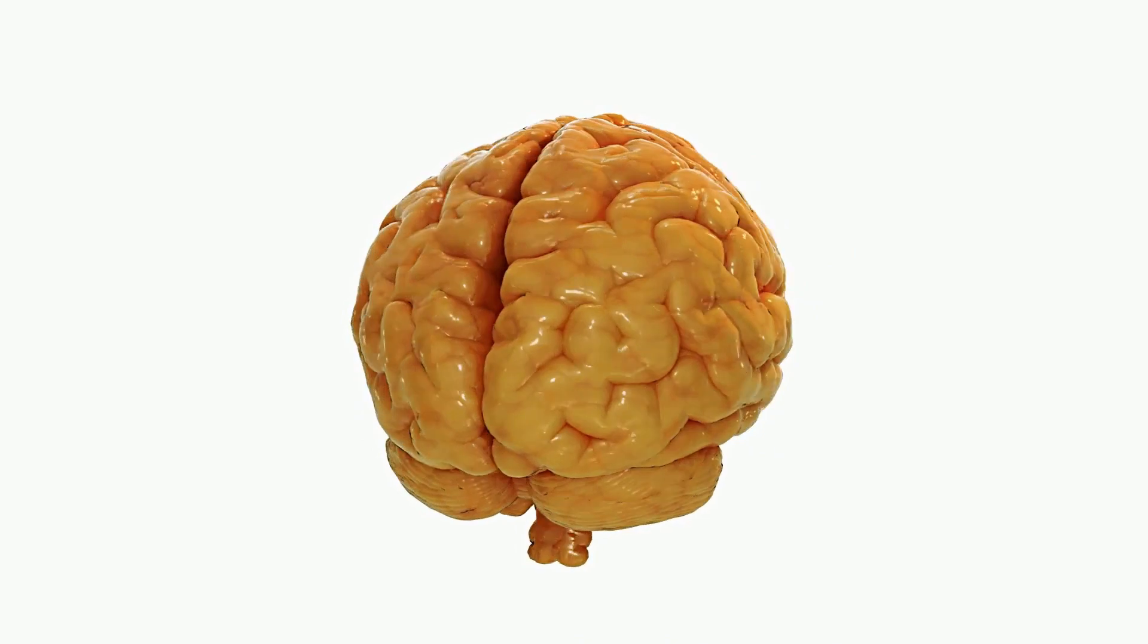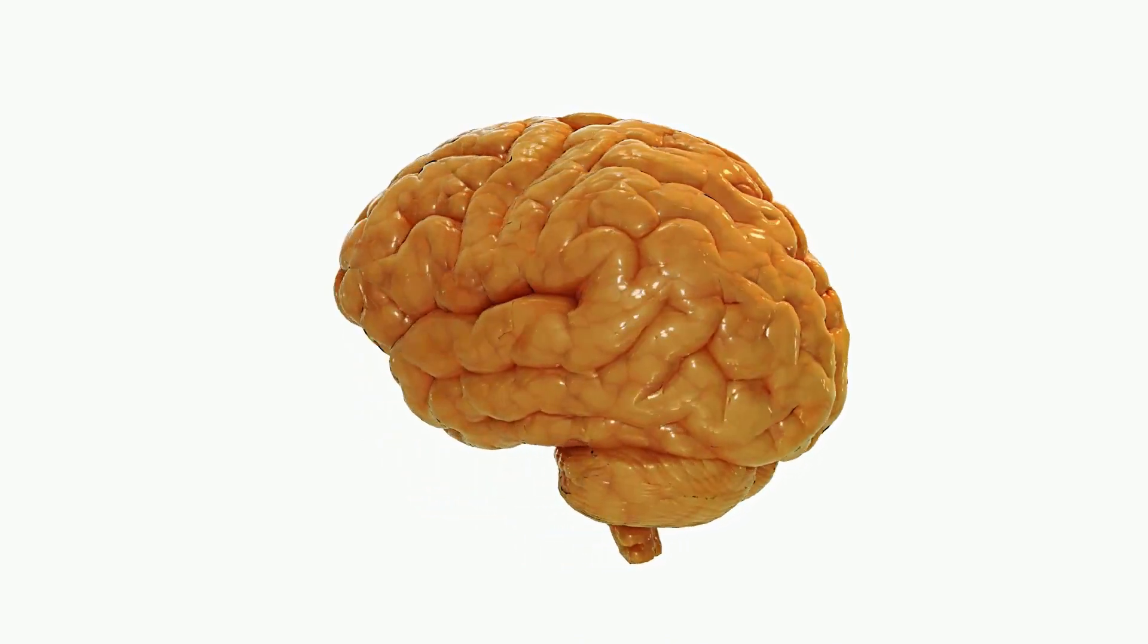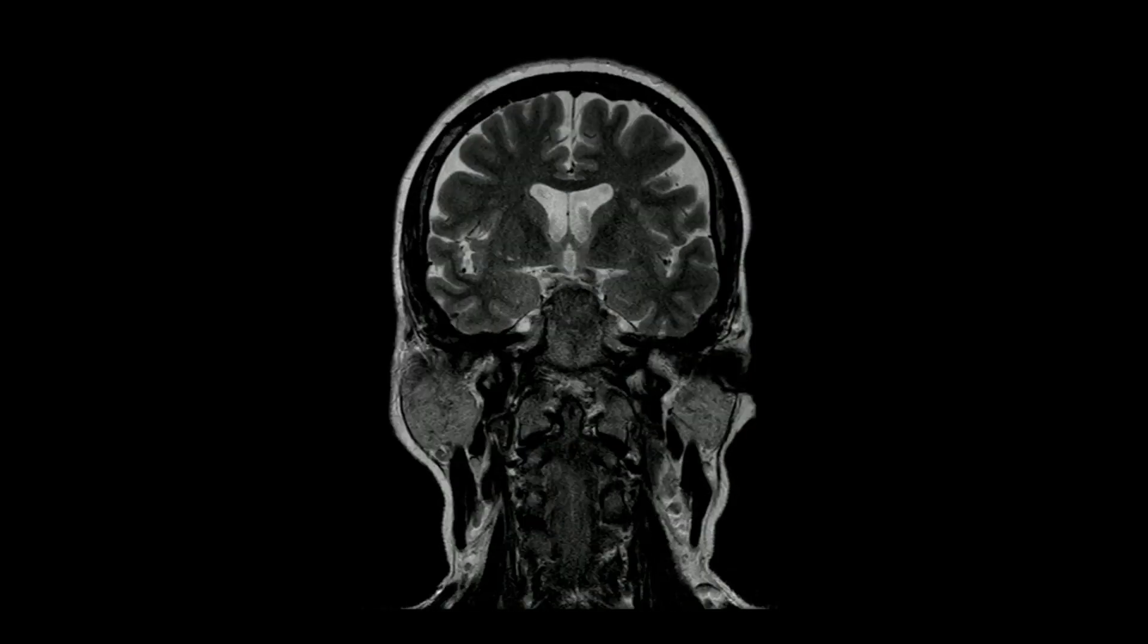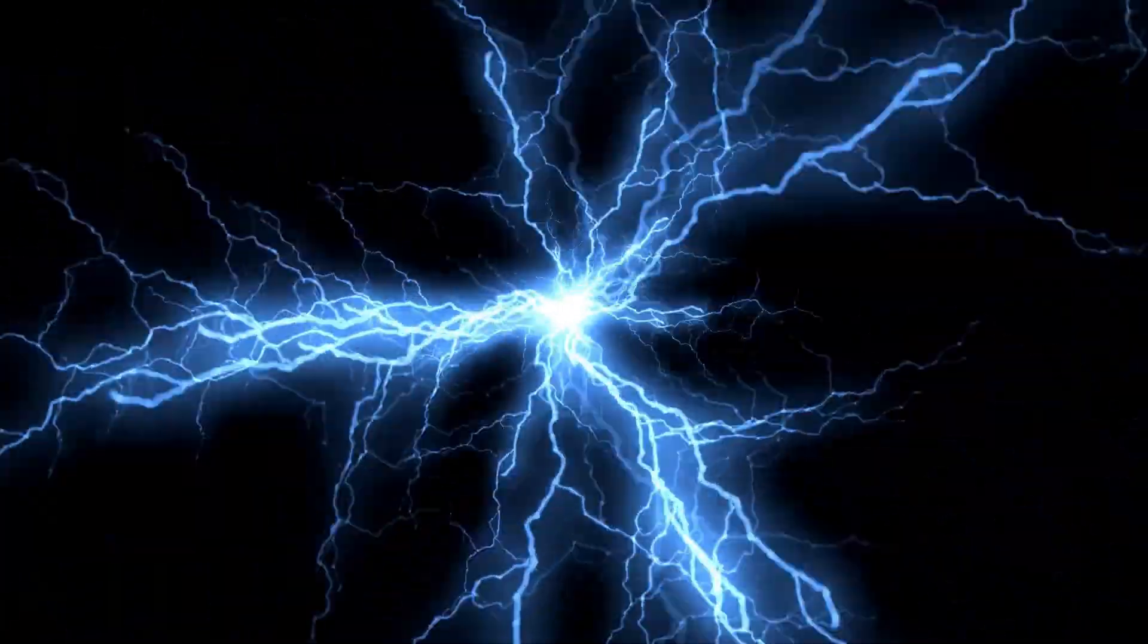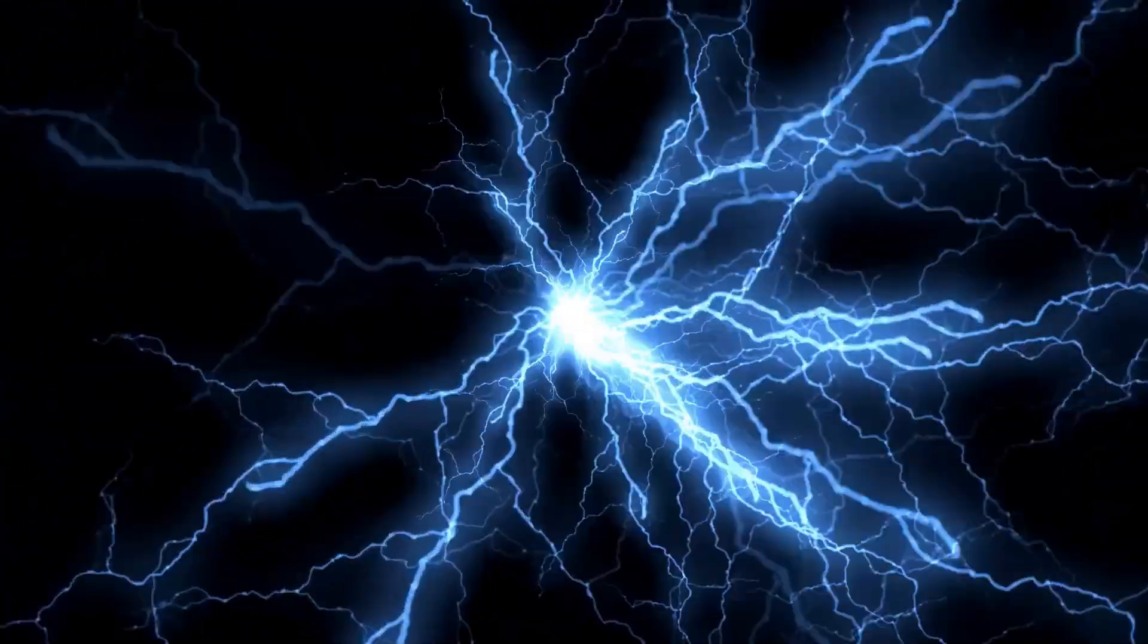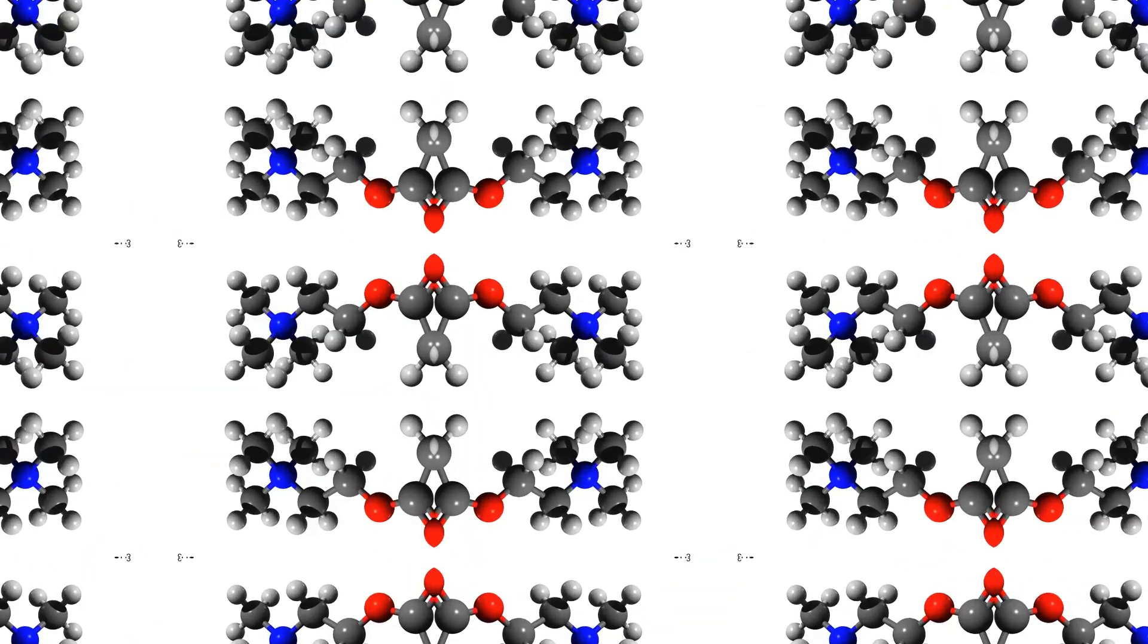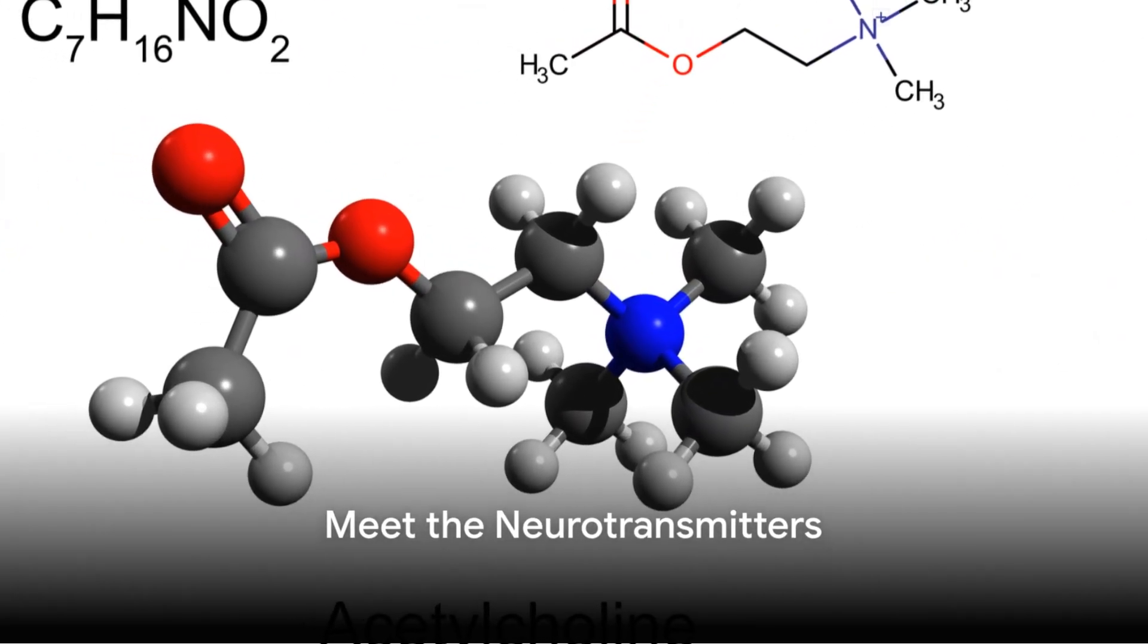They help the brain to rewire itself, responding to new experiences or recovering from injuries. Neurotransmitters shape the brain's activity and can even influence the formation of new neural connections. Let's meet the major players in this chemical symphony.